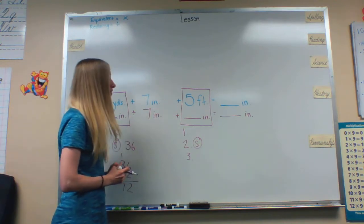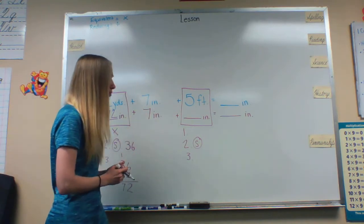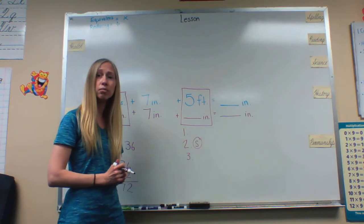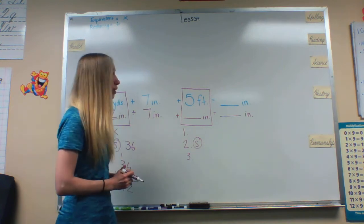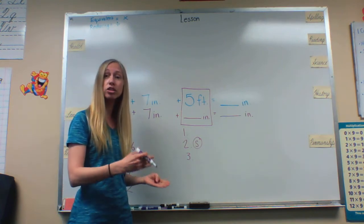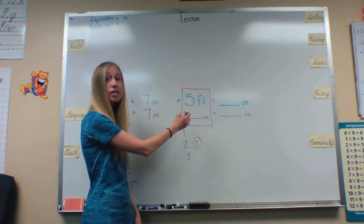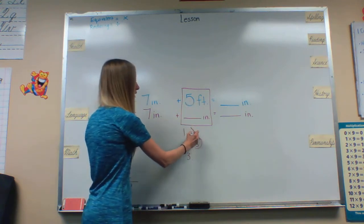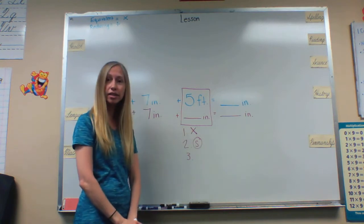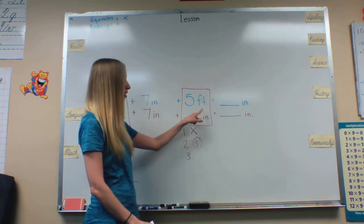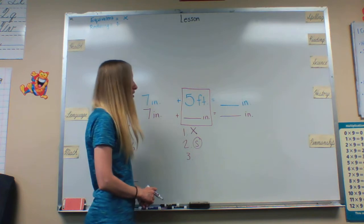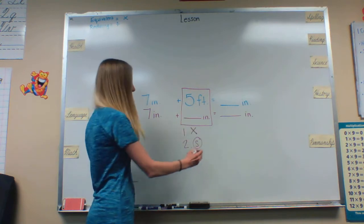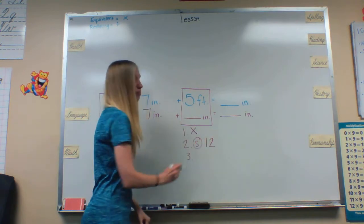Then I move over to 5 feet equals how many inches. Again we need to see if we're going to multiply or divide. So we need to see if we're going bigger to smaller or smaller to bigger. And in this case we are also going bigger to smaller, so we will multiply. Then we ask ourselves how many of our smaller fits into our larger. Since there are 12 inches in one foot that will be our special number.